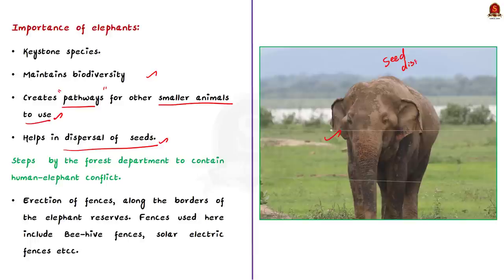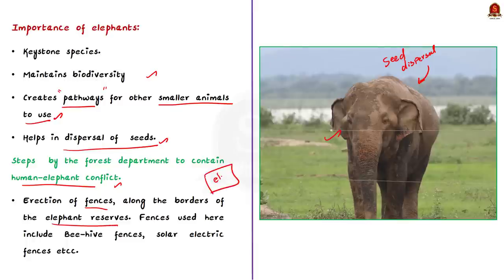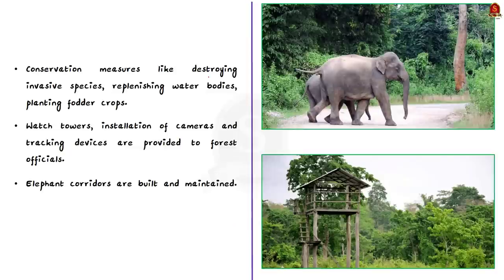Now let us see the different steps taken by the forest department to contain human-elephant conflict. First is the erection of fences along the borders of elephant reserves, done to keep the elephants from coming into contact with human settlements. Some of the fences used here include beehive fences and solar electric fences. The second is conservation measures like destroying invasive species inside the elephant reserves, replenishing water bodies, and planting necessary fodder crops within elephant reserves.